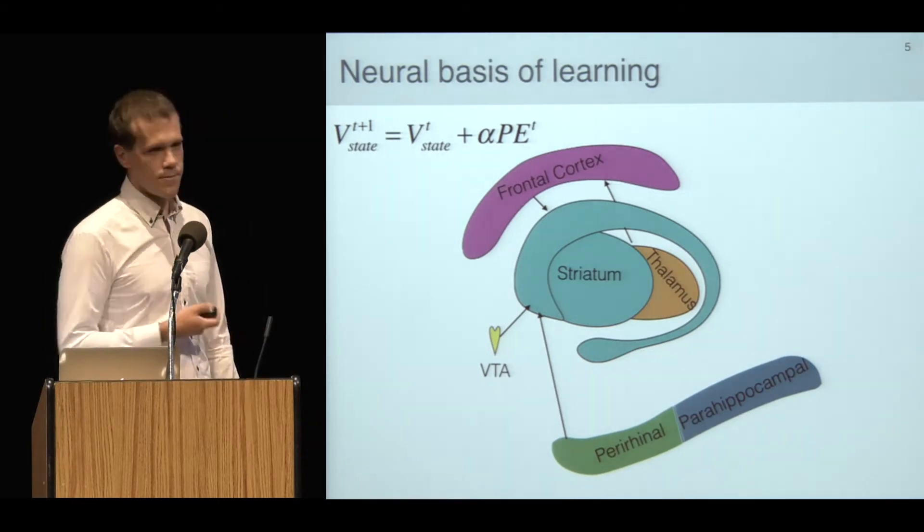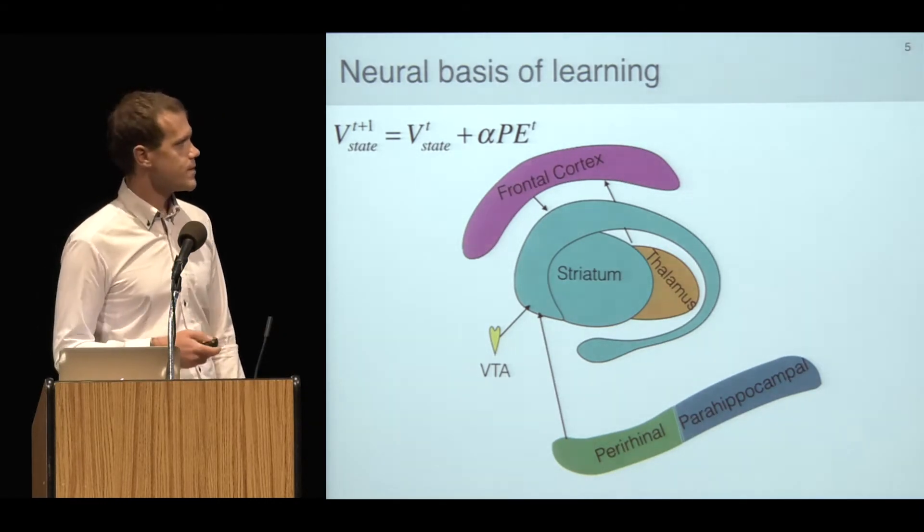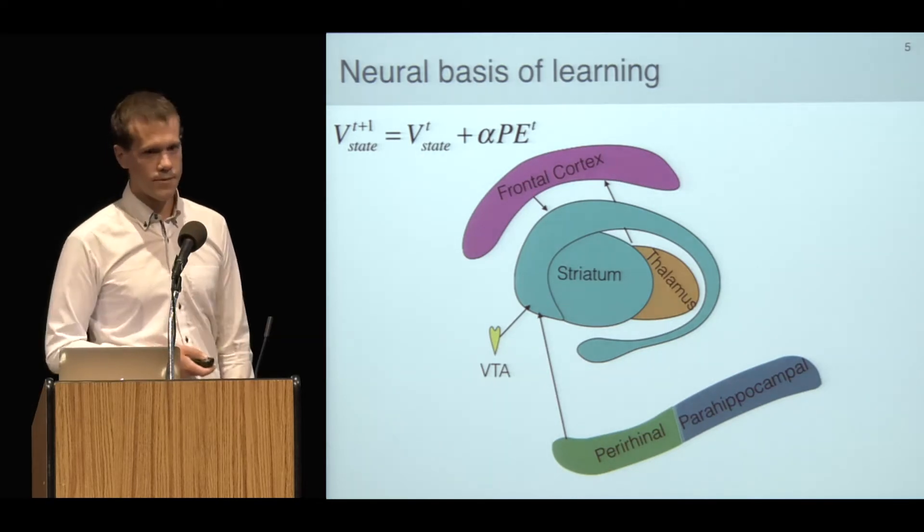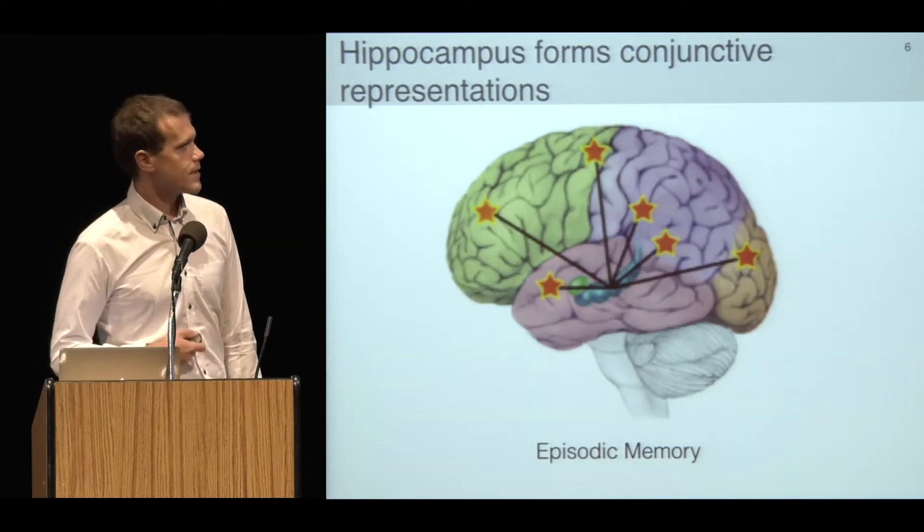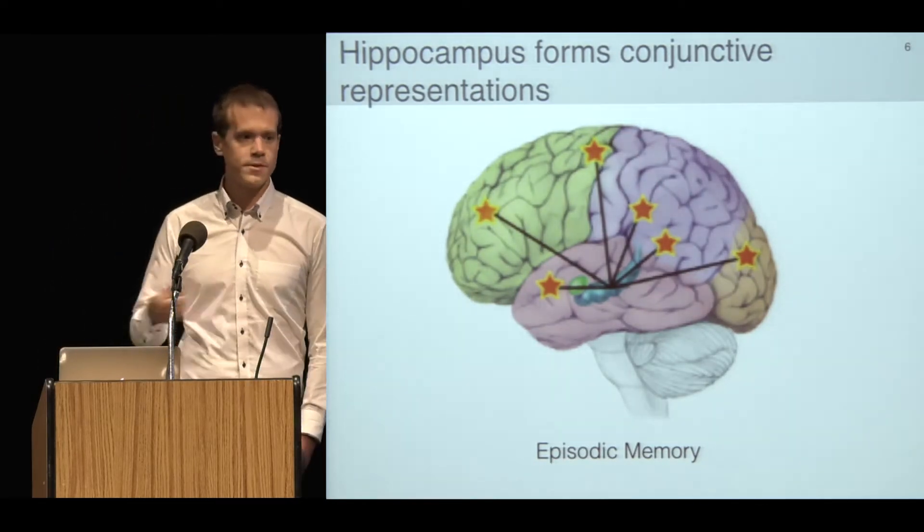There's one more piece that's relevant to the arguments I'm going to make about conjunctions, and that's the role of the hippocampus and episodic memory. If you lose your hippocampus, you can't form new declarative memories for the rest of your life.